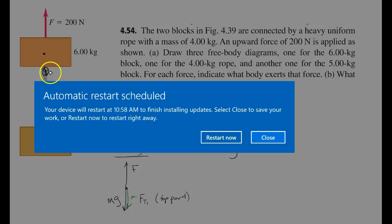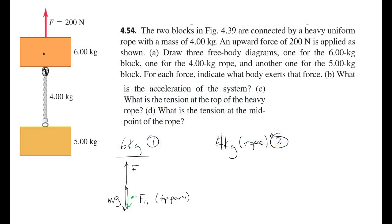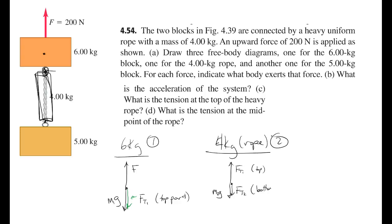I'm going to look at the rope as one whole object — think of it like a single block. There's a tension at the top and a tension at the bottom, plus the weight of the entire rope. So there's FT1 pulling up at the very top, M2G pulling down, and FT2 pulling down at the bottom. Because we're accelerating up, FT1 must be greater than M2G plus FT2. The tension at the bottom is supplied by the bottom block.